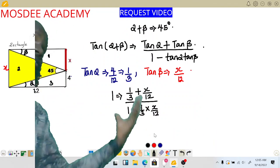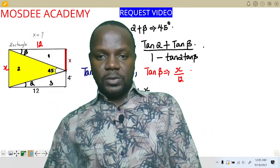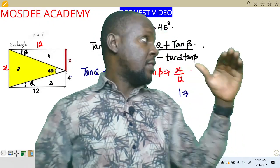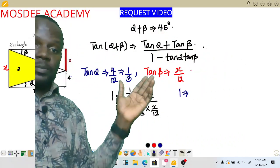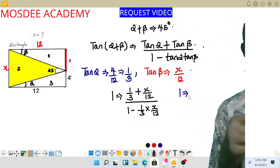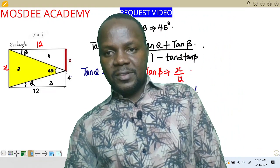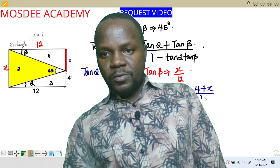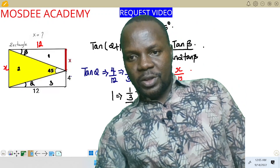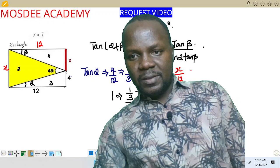So now let's finish this solution. Taking the LCM of the numerator — the LCM is 12 — we get (4 + x) over 12. Then for the denominator, multiplying 1/3 by x/12 gives us x/36, so the denominator becomes 1 minus x over 36. So we have (4 + x)/12 divided by (1 − x/36).